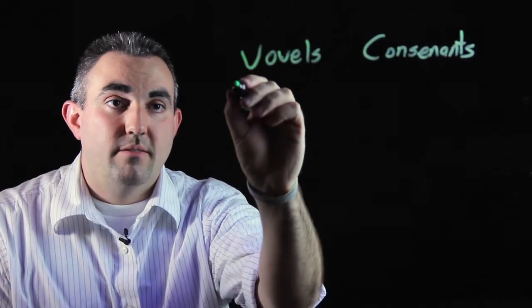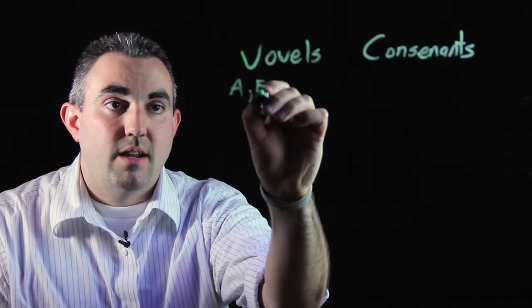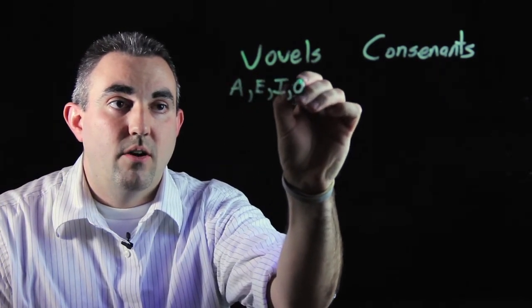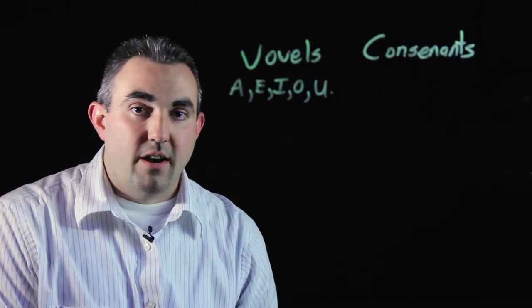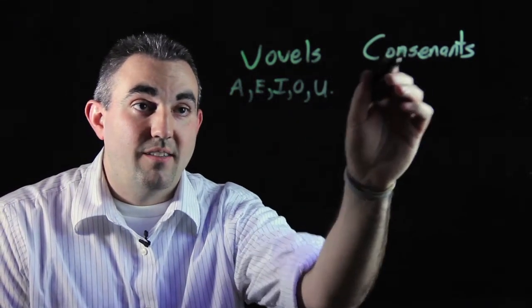There are five vowels in our alphabet. There are A, E, I, O, and U. Any other letter that's not one of these five is a consonant.